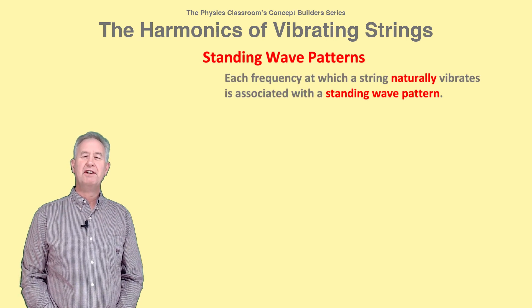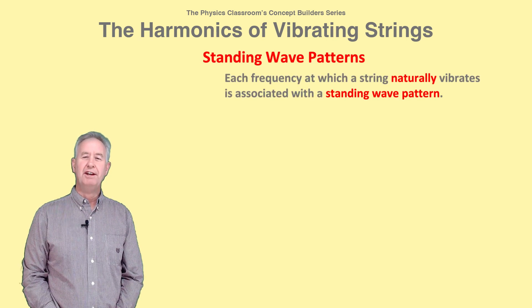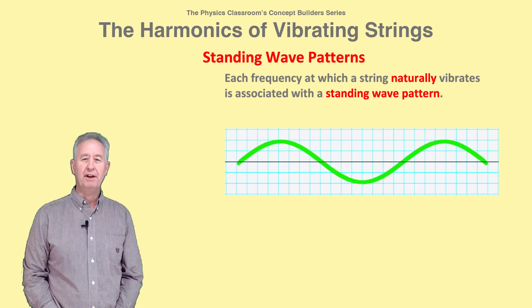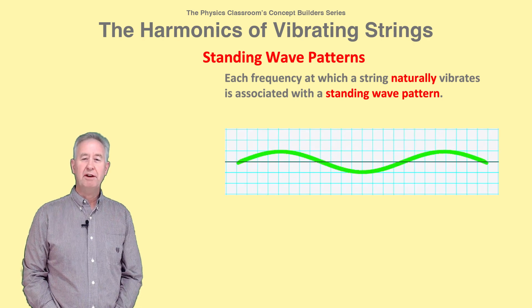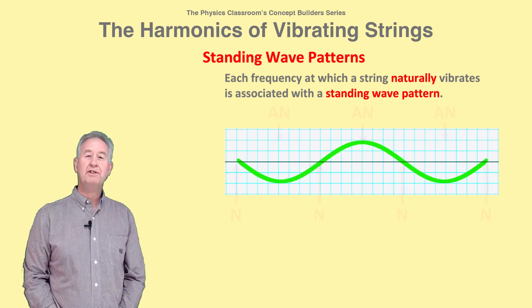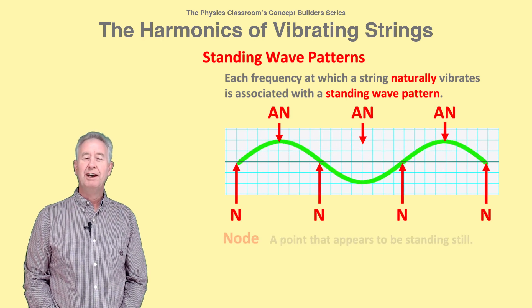Every string has a set of frequencies at which it naturally vibrates. Each frequency is associated with a standing wave pattern. Standing wave patterns, like this one, consist of nodes and antinodes.